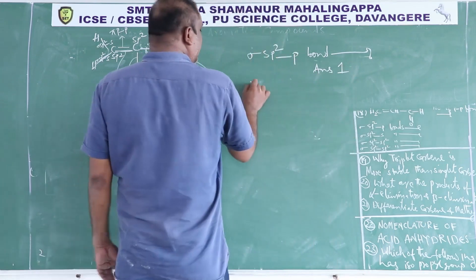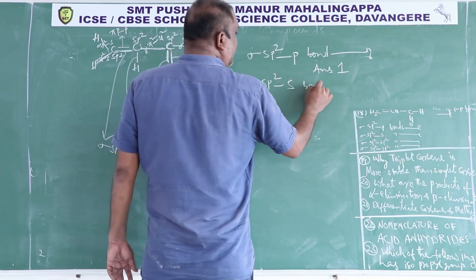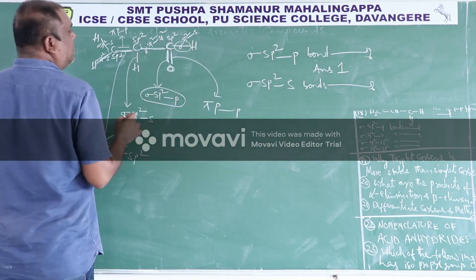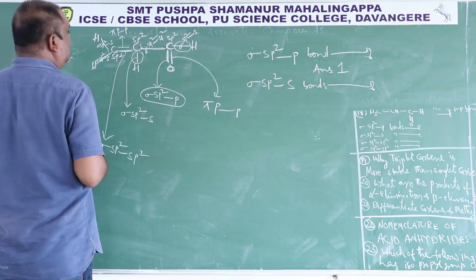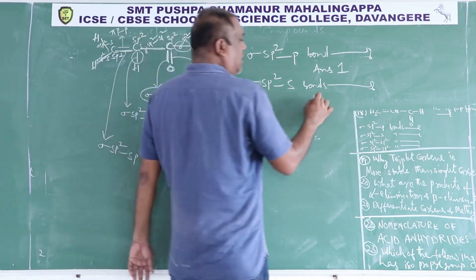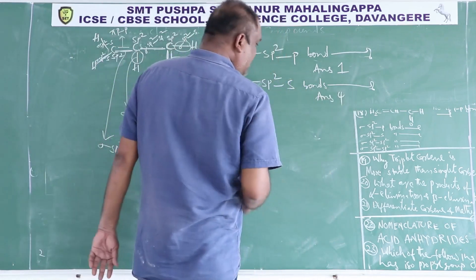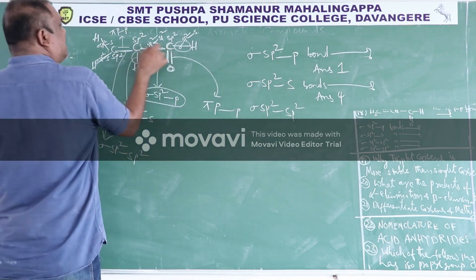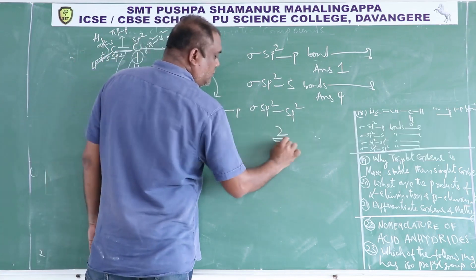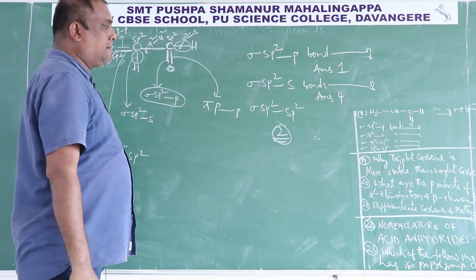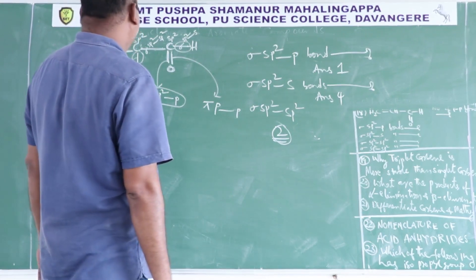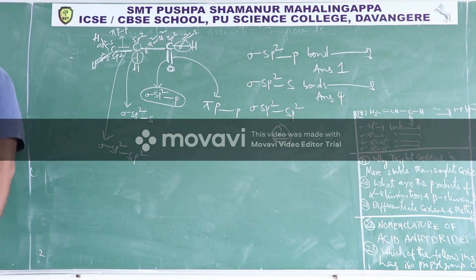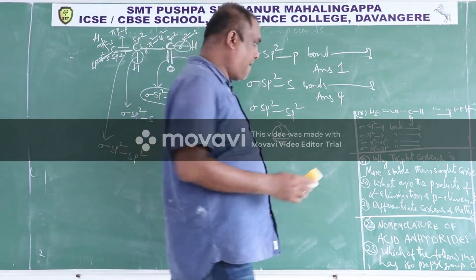He asks: how many sigma SP2-S bonds are there? Counting: there are 4 sigma SP2-S bonds. He then asks how many sigma SP2-SP2 bonds: there are 2 such bonds. This is how we predict the type of bonds in an organic molecule. Question number 18 is complete.